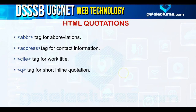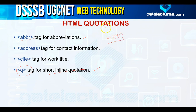Next is HTML quotations. We use different quotation-related tags in HTML: the 'q' tag is used for short inline quotations; the 'abbr' tag is used for abbreviations — for example, WHO stands for World Health Organization; the 'address' tag is used for contact information like author or owner details; and the 'cite' tag is used for the title of a work and displays text in italic form.